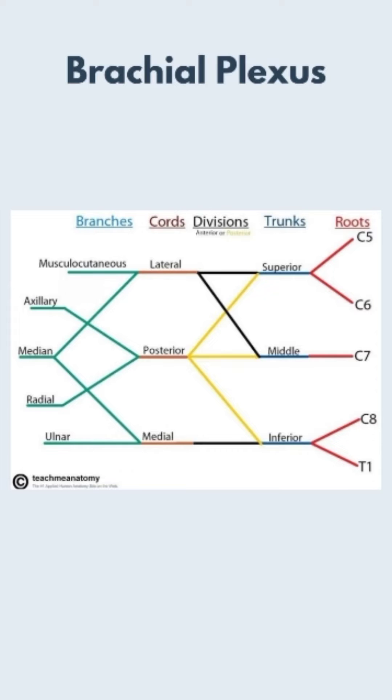So in ULTT, the branches of the brachial plexus are the ones mainly being tested. So the branches, the acronym I use for them is MAMRU, M-A-M-R-U, Musculocutaneous, Axillary, Median, Radial, and Ulnar.